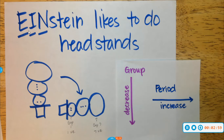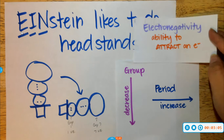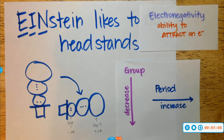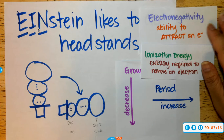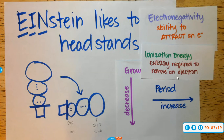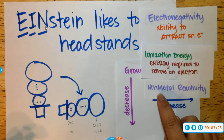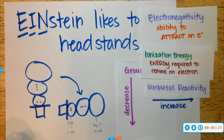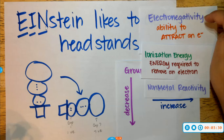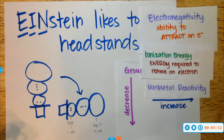The E in Einstein is going to stand for electronegativity — that's the ability to attract an electron. The I in Einstein is going to be for ionization energy, the energy required to remove an electron. And then the N in Einstein represents nonmetal reactivity. That way it's easier to remember which one is decreasing and which one is increasing, because I do understand that it can get a little confusing.